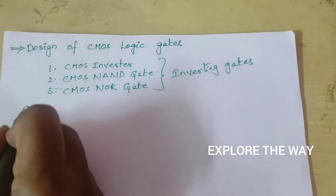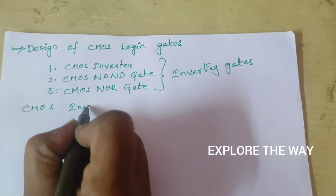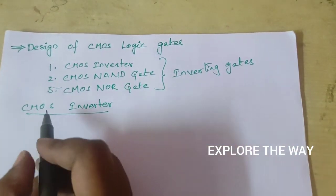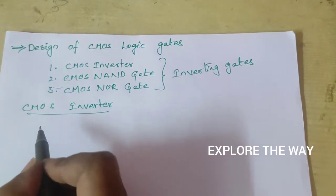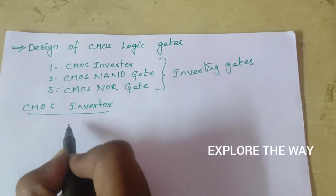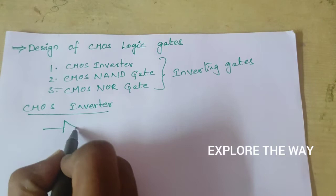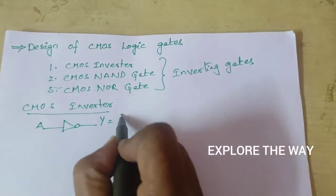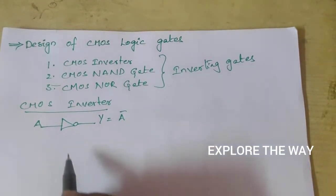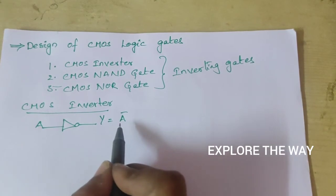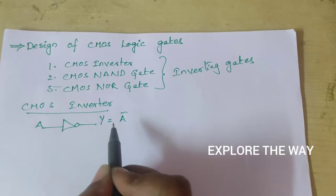First of all we will draw the CMOS inverter. Let us write the boolean function for the CMOS inverter. Suppose its input is A and the output is Y. Then its logic function is Y equal to A bar. Here we have only one input variable. In that case we need only two transistors — one NMOS transistor and one PMOS transistor.